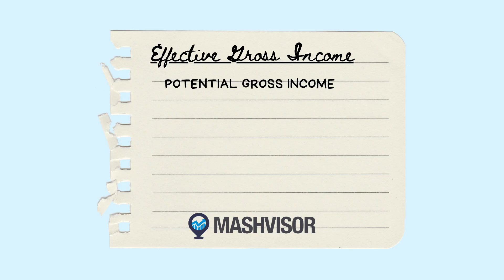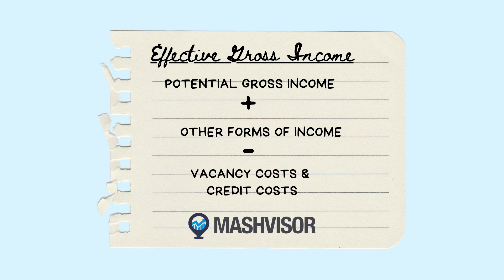So let's look into the formula. EGI can be calculated by taking the potential gross income from a rental property, adding other forms of income, and deducting vacancy costs and credit costs. Let's now break down the elements of the effective gross income formula for further understanding.